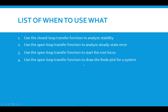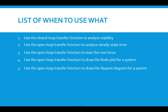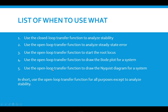We also use the open loop transfer function to draw the Bode plot for a system, and we manipulate that Bode plot with controller additions to shape it to get the dynamics that we want. Additionally, we use the open loop transfer function when we draw the Nyquist diagram for a system — the Nyquist diagram is also used for stability analysis at times, but we draw it for the open loop system. So in short, what you'll see is that we use the open loop transfer function for most of the analyses we do for a control loop, except when using the Routh-Hurwitz criteria to analyze stability.